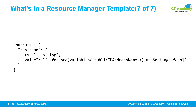Output defines any information you'd like to receive when the template runs. In this example, by the end of the deployment you will get an output back which is the hostname, and the value is referencing the public address name's DNS settings FQDN — the fully qualified domain name — shown on screen, so you can copy it and use an RDP or SSH client to connect.